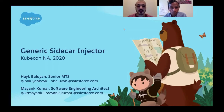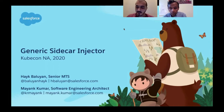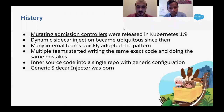Here at Salesforce we are big believers in open source and we try to contribute as much as possible. As part of those contributions, earlier this year we open-sourced a generic solution for sidecar injection for Kubernetes workloads. When Kubernetes announced support for mutating admission controllers in 1.9, the sidecar pattern really became a first-class citizen of Kubernetes.